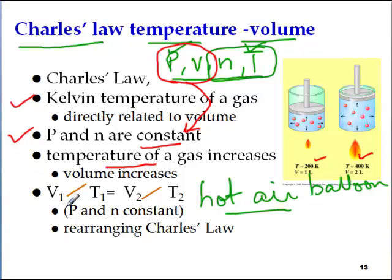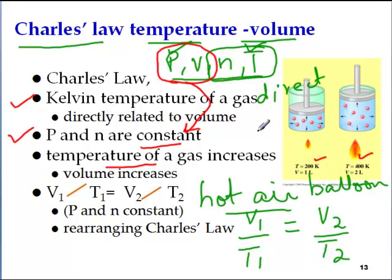Now this law is expressed as the equation shows. It's actually V1 over T1 equals V2 over T2. So this is a direct relationship in which we're saying that when we increase the temperature, the volume of the gas correspondingly increases.